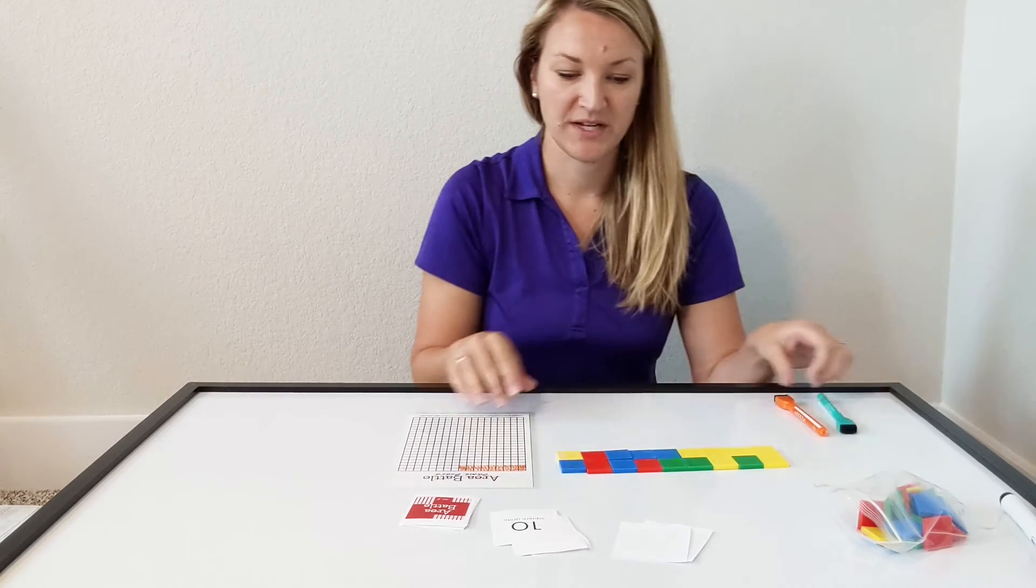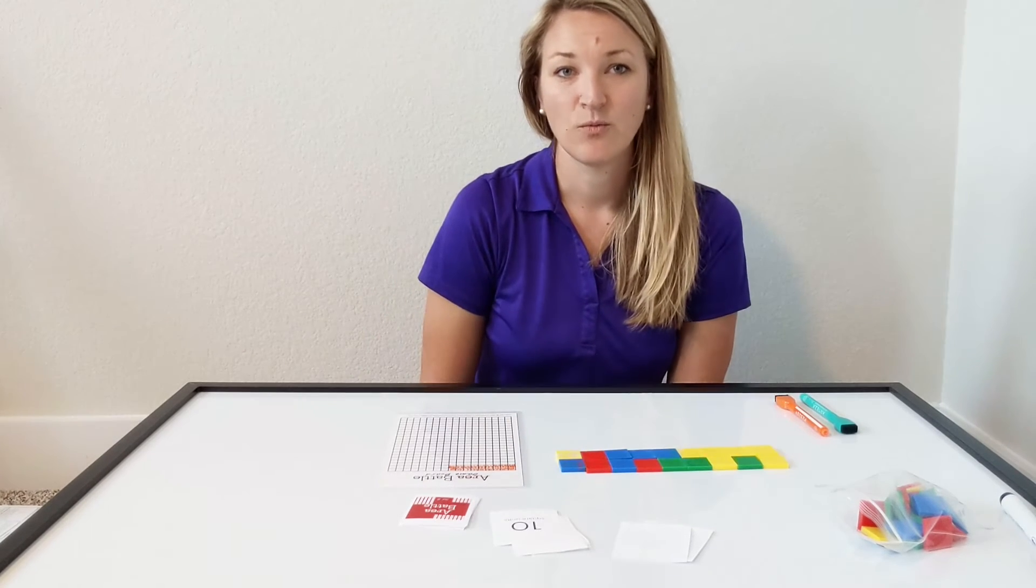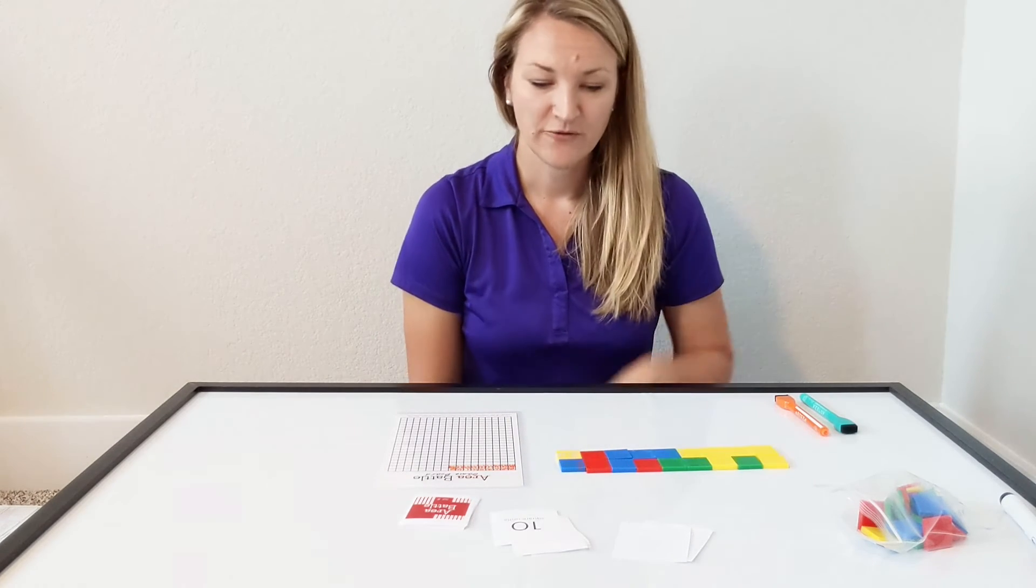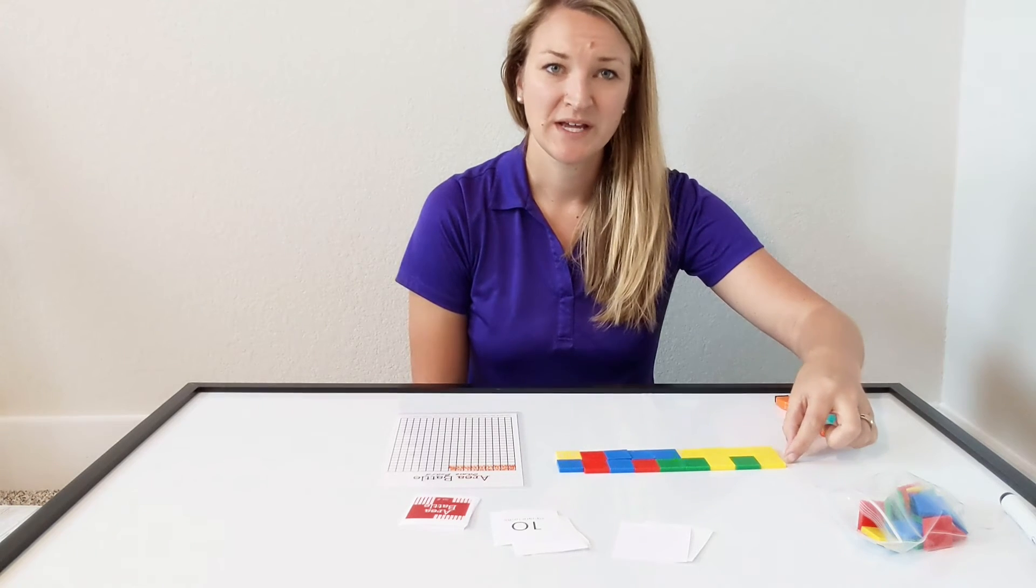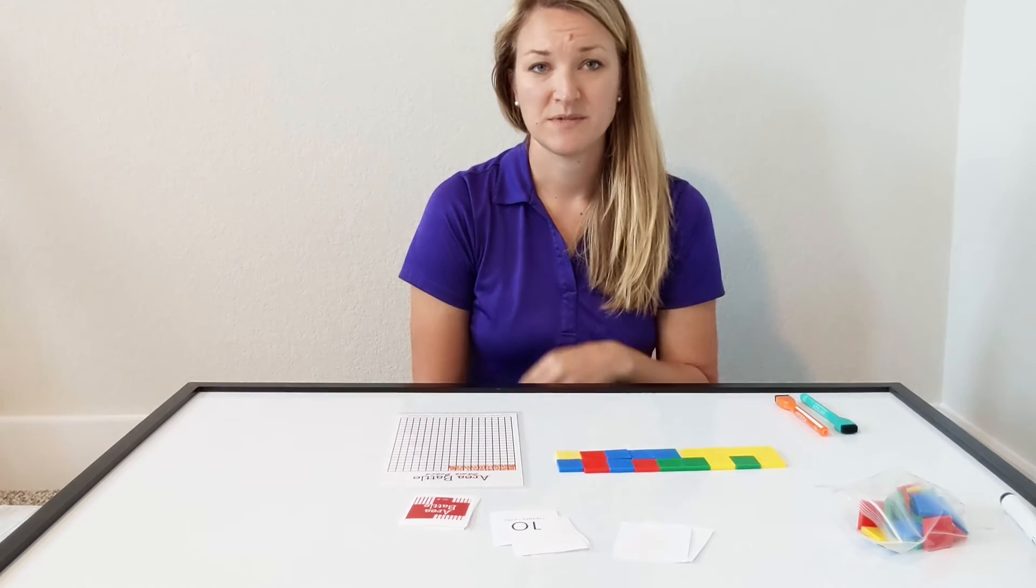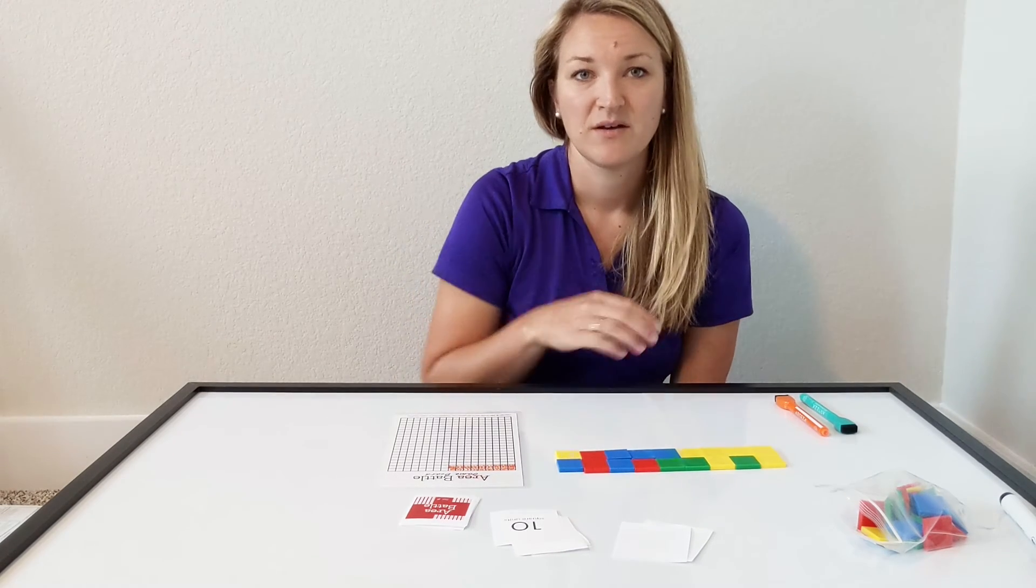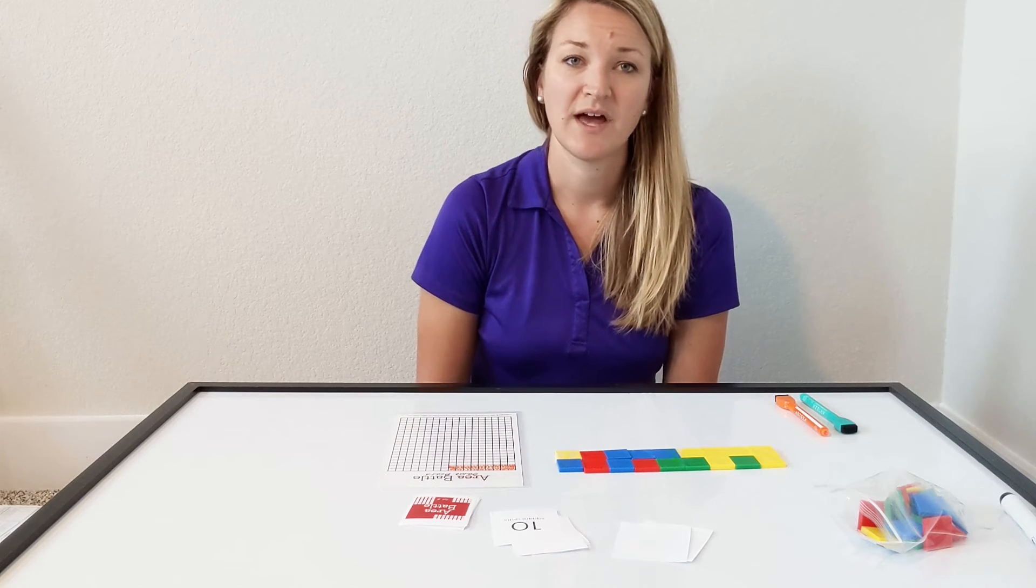Now for the older students, as they find their arrangement, you can walk around and discuss what equations could be used to represent their model. For example, the model I have here, I have two rows and nine are in each row. So I could use 2 times 9 to represent my model because I have two equal groups or two equal rows of nine tiles.